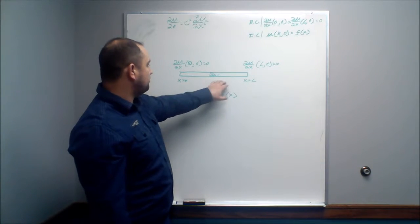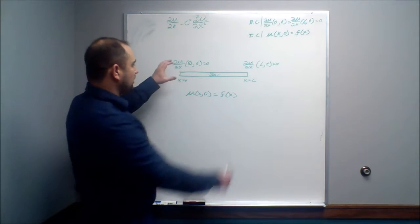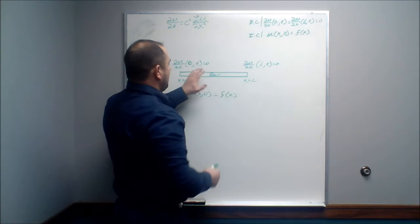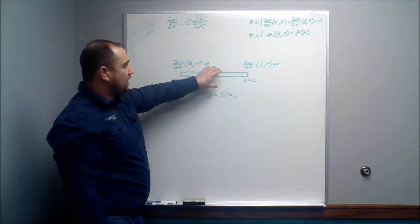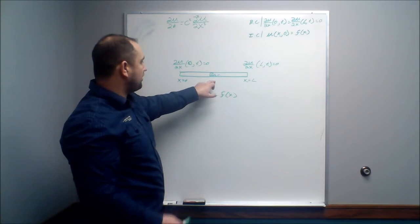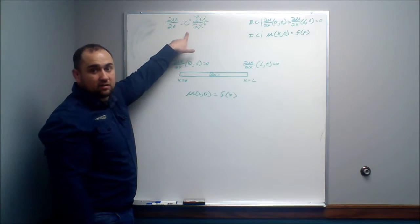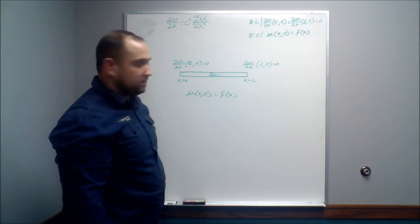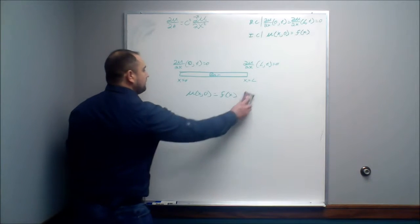Or we might have put more heat at both ends and want to know how the heat is going to come into the middle. All of that — how the heat is going to evolve and flow over time throughout the bar — is going to be determined by this equation and these boundary conditions and initial condition. So let's look at solving this problem.